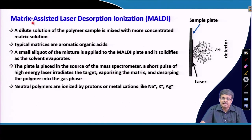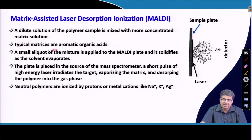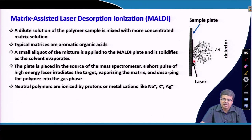As discussed, we cannot fragment the polymer chain, so soft ionization is required. For that, a dilute solution of polymer sample is mixed with a more concentrated matrix solution — typically aromatic organic acids. A small aliquot of this mixture is applied to the MALDI plate, and it solidifies as the solvent evaporates. Once the solvent is evaporated, we have the mixture of polymer sample and the matrix. The plate is then placed in the source of the mass spectrometer, and a short pulse of high-energy laser irradiates the target, vaporizing the matrix.